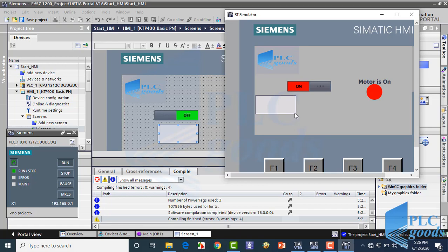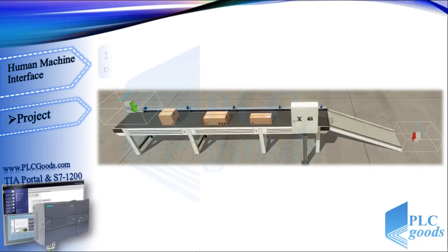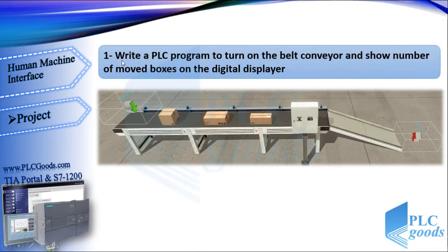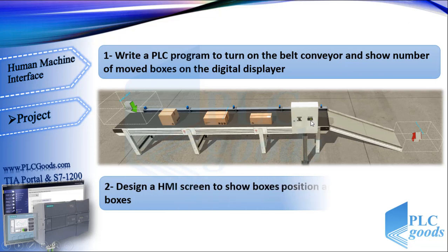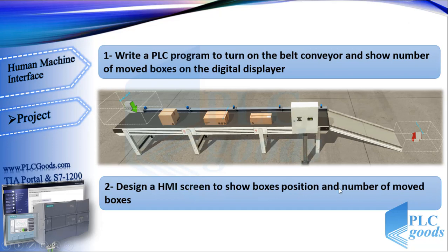Now let's define a practical project with Factory IO. We want to write a PLC program to turn on a belt conveyor and show the number of moved boxes on a digital display. Here is a selector to turn on the conveyor and a digital display to show moved boxes. We're going to design an HMI screen to show box positions and the number of moved boxes. We can detect box positions with five sensors and count the number of moved boxes with the last sensor.